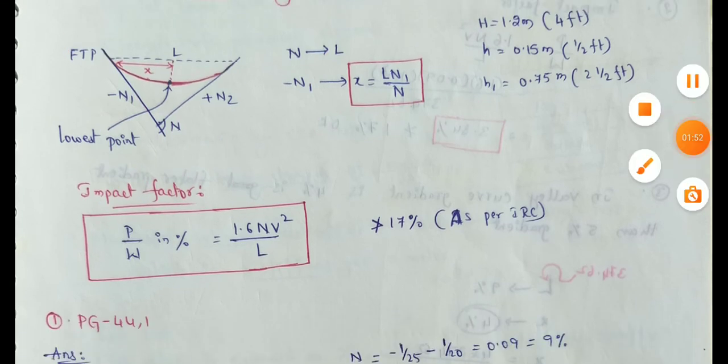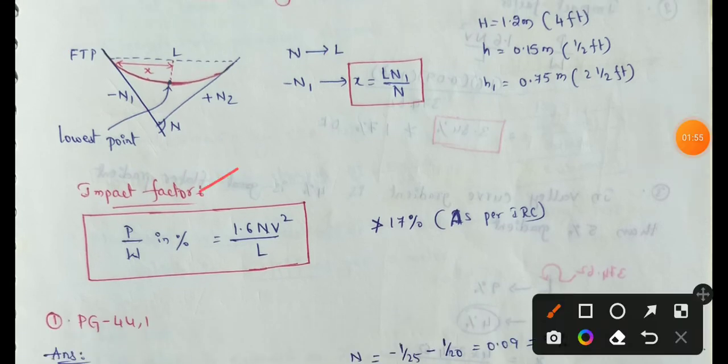Impact factor is the ratio of maximum centrifugal force to the weight of the vehicle, expressed as a percentage. Impact factor equals P/W, where P is the maximum centrifugal force and W is the weight of the vehicle.